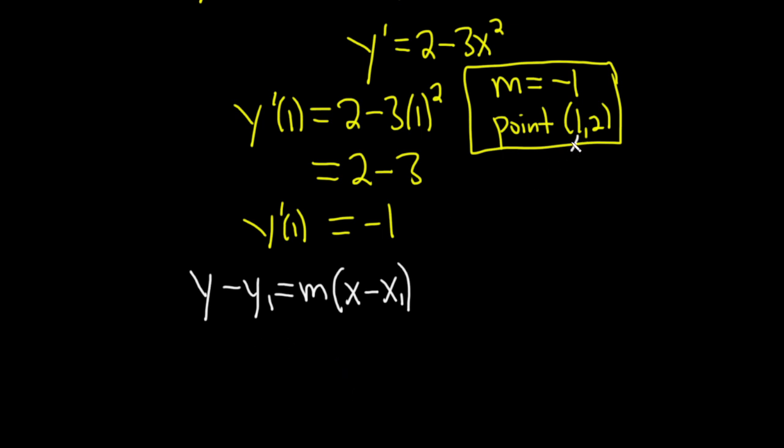So our x1 is 1, our y1 is 2. So this is y minus 2 equals m is negative 1 times parentheses x minus, and then x1 is 1. Let's just double check that. Our y1 is 2, our m is negative 1, our x1 is 1. Yeah, everything looks okay.